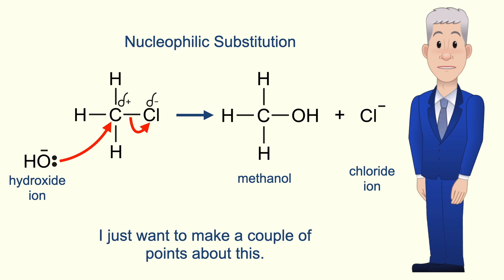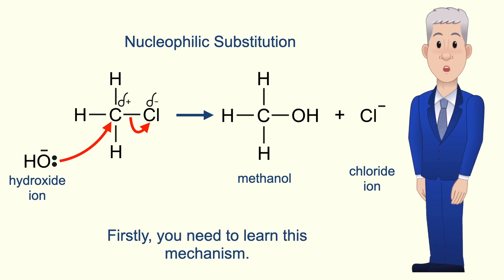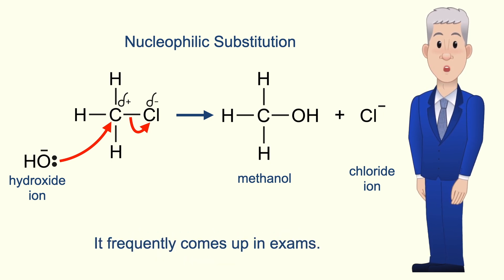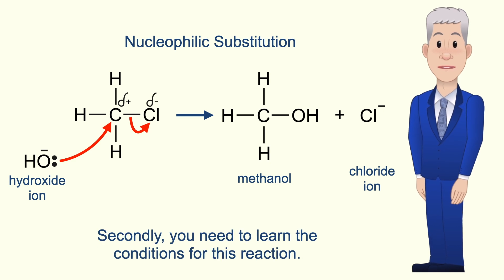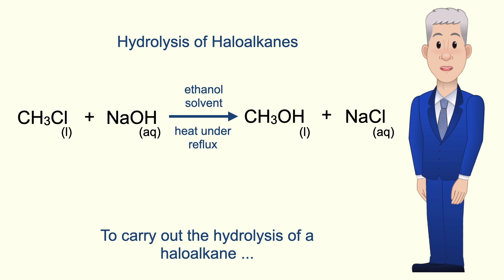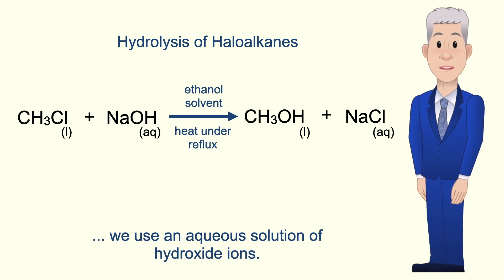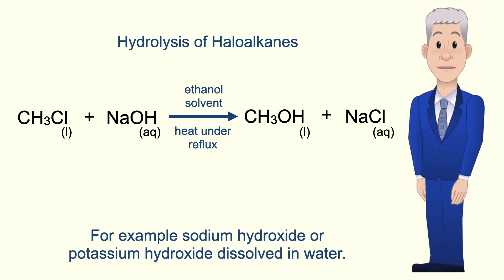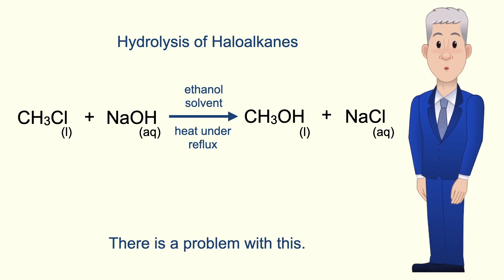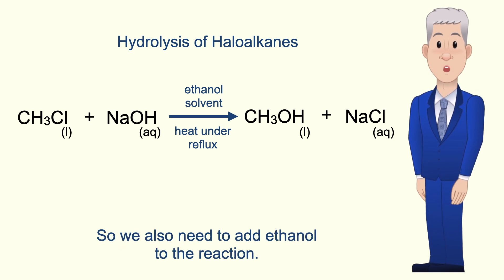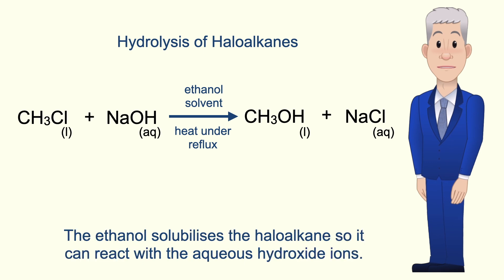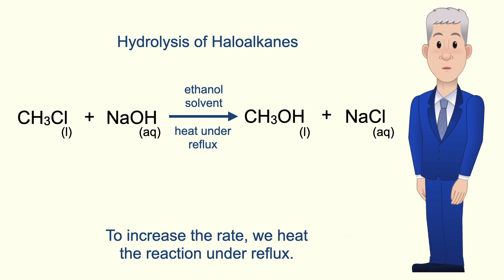Now just a couple of points. Firstly, you need to learn this mechanism — it frequently comes up in exams. Secondly, you need to learn the conditions for this reaction. To carry out the hydrolysis of a haloalkane we use an aqueous solution of hydroxide ions — for example sodium hydroxide or potassium hydroxide dissolved in water. However, haloalkanes are insoluble in water, so we also need to add ethanol to the reaction. The ethanol solubilizes the haloalkane so it can react with the aqueous hydroxide ions. To increase the rate we heat the reaction under reflux.